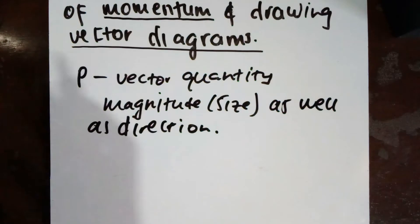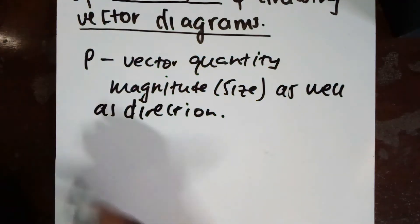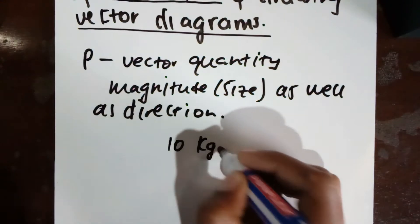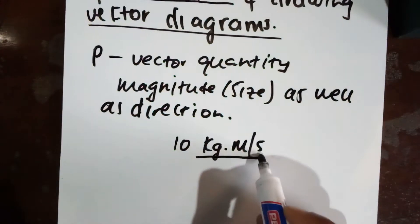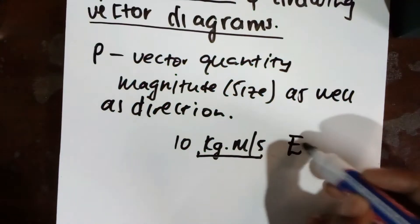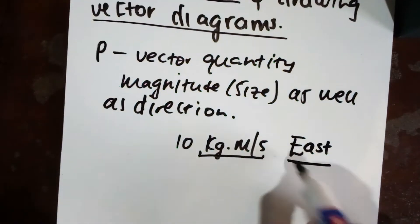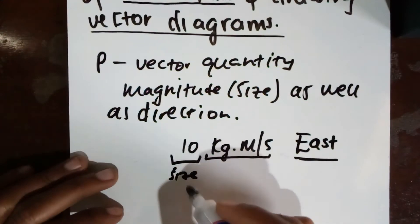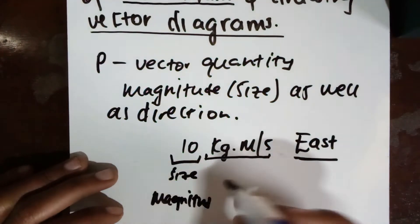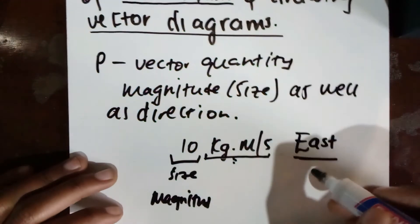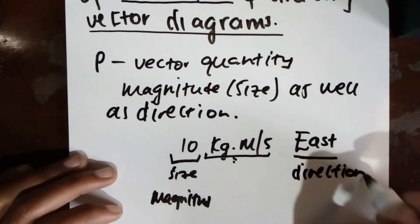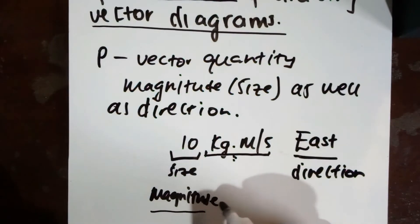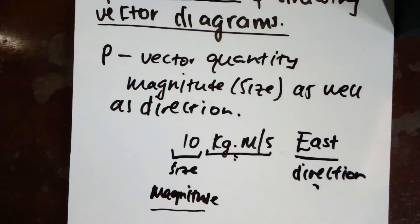What does that mean in practice? After you calculate the momentum of an object, you always include the direction. For example, if you calculate the momentum of some object and find the answer to be 10 kilograms meters per second — that is the unit of measure — you must also include the direction, such as 'east.' So 10 would be your magnitude and 'east' would be your direction.